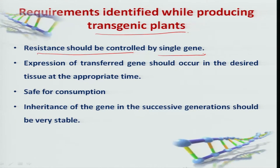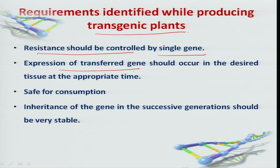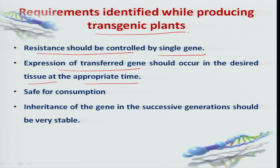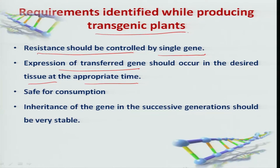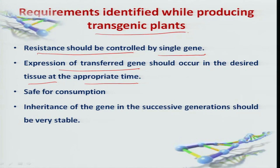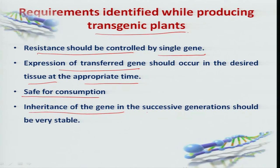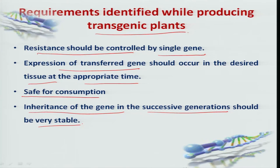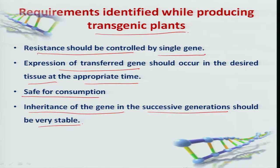Important requirements for producing transgenic plants include: resistance should be controlled by a single gene, making gene transfer straightforward. Expression of the transferred gene should occur in the desired tissue at an appropriate time — for example, BT cotton toxins must be expressed in the bolls and flowers at the right stage. Safety for non-target organisms must be ensured. Inheritance of the gene in successive generations should be very stable, with genes transferred to the next generation maintaining the same level of expression.